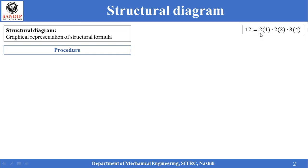This says that in the first stage we have 2 speed steps, in the second stage we have 2 speed steps, and in the third stage we have 3 speed steps. In the first stage, 2 adjacent speeds are separated by 1 speed step. In the second stage, 2 speed steps are separated by 2 speed steps. In the third stage, 2 speed steps are separated by 4 speed steps. We will understand what x1, x2, x3 mean while drawing the structural diagram.